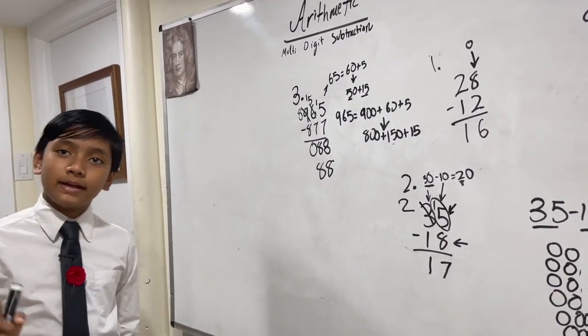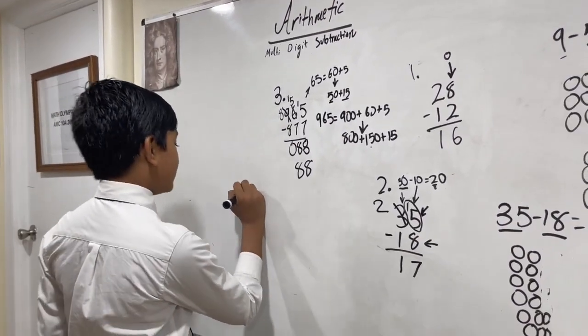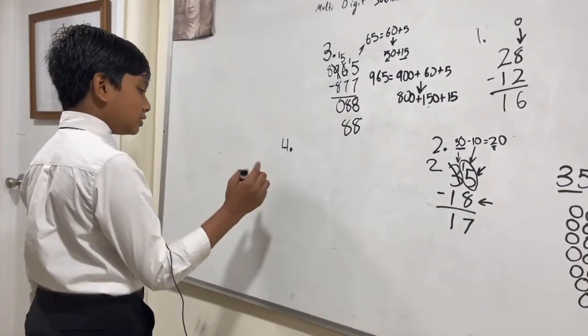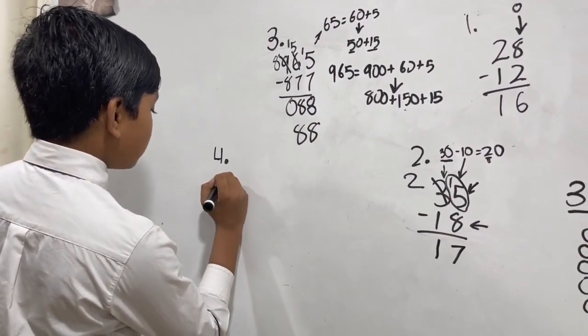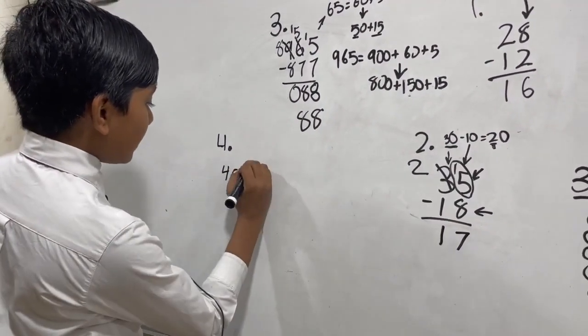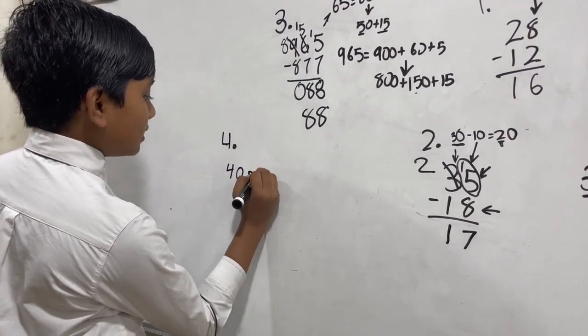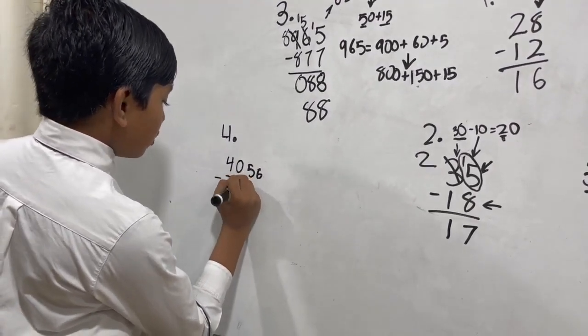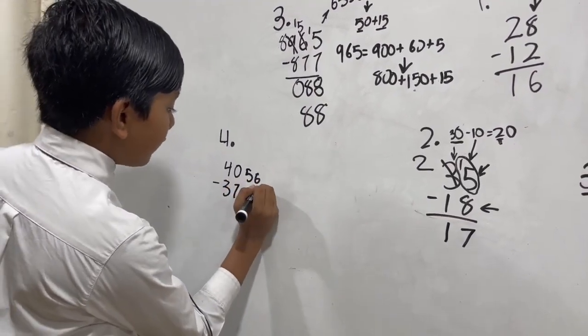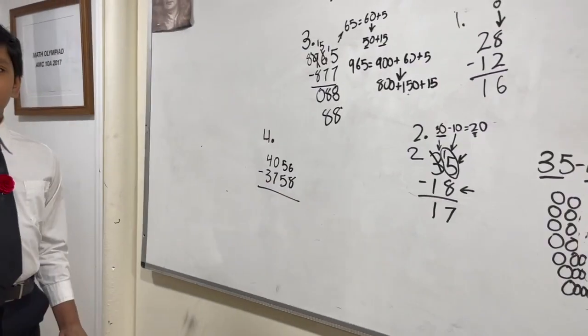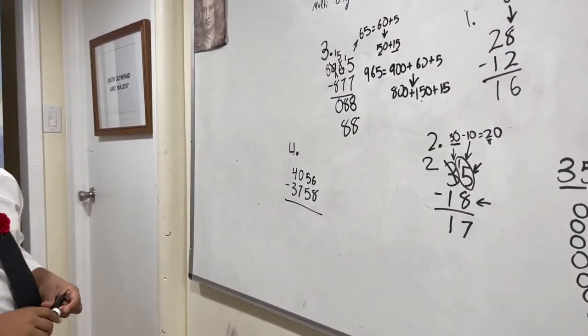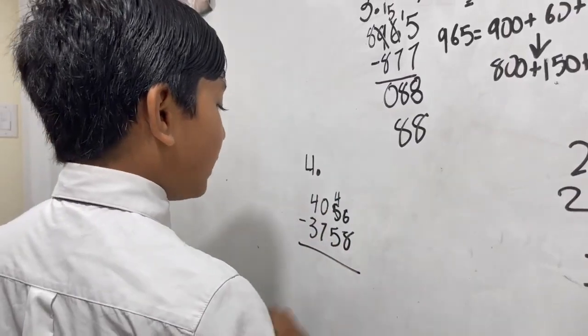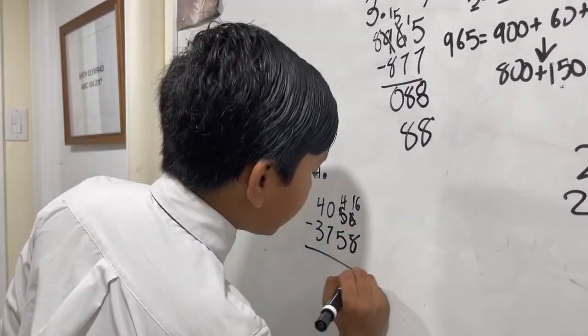Now let's do one more example. This example is going to use some tricky tricks. Let's say we have 4056 minus 3758. 6 minus 8 doesn't work, so you know the deal by now: this 50 becomes a 40, this 6 gets the extra 10. 16 minus 8 is 8.